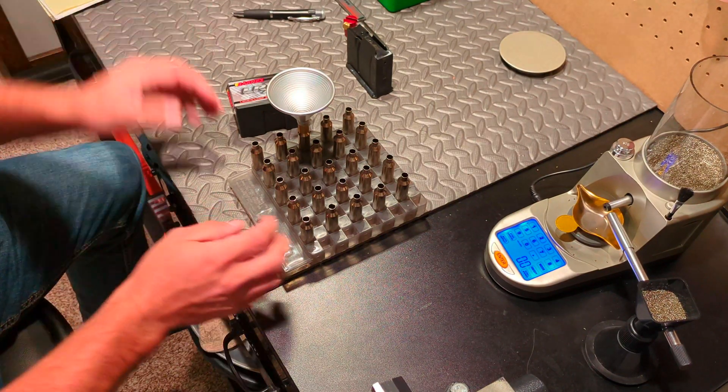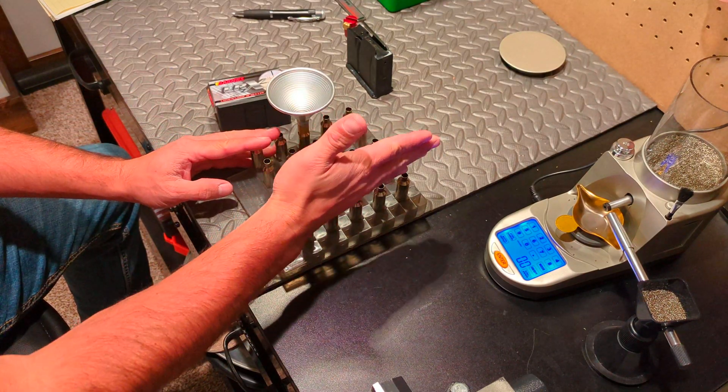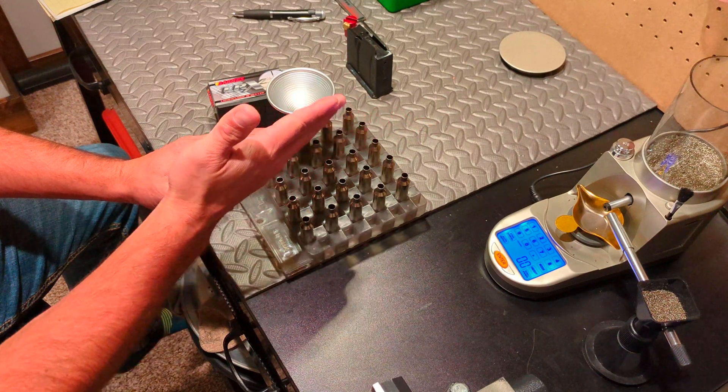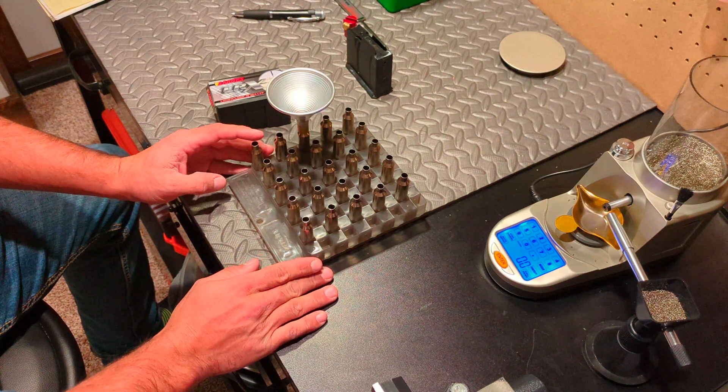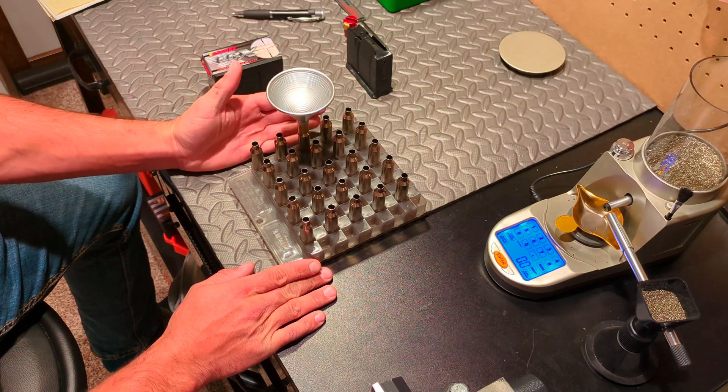A little method to my madness around the loading block. What I've got going on is I've got five cartridges per each powder charge. So for example, my 56 grains that I'm working on, I've got five here.